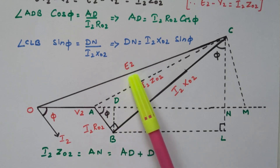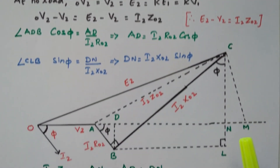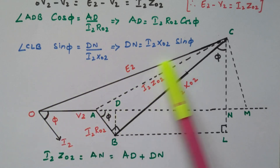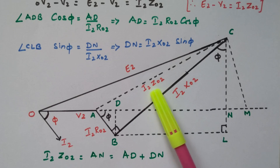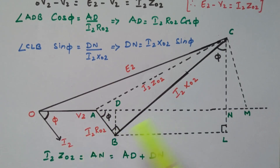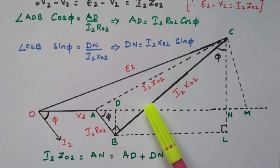E2 is the vector sum of V2 plus I2·Z02, as already discussed. So E2 equals V2 plus I2·Z02. I2·Z02 is the vector sum of resistive drop and inductive drop. Resistive drop is I2·R02, inductive drop is I2·X02. This resistive drop is in phase with the current, because for resistance, current and voltage are in phase. In case of inductive drop, it leads by 90 degrees. The vector sum of these two is I2·Z02, and the vector sum of I2·Z02 and V2 is E2.